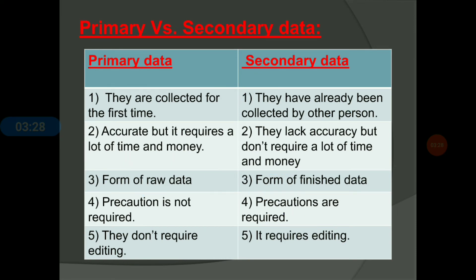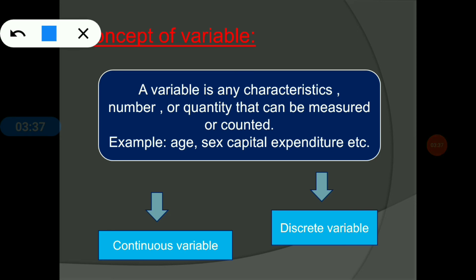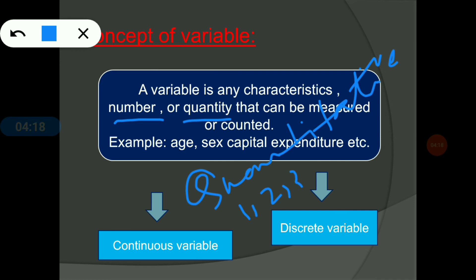Here we can see the concept of variable, which is one of the most important topics of statistics. A variable is any characteristic, number, or quantity that indicates quantitative data only — which can be measured, which can be counted, and which is used in mathematical operations. Variable indicates a numerical value where it makes sense to perform mathematical operations, not qualitative data. Variable is of two types: discrete variable and continuous variable, which will be discussed in the next video.